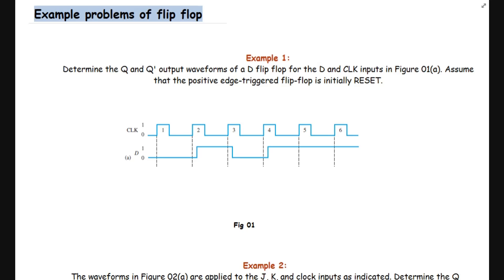Today we are going to solve some example problems of flip-flop. Example 1: Determine the Q and Q' output waveforms of a D flip-flop for the D and clock inputs as shown in Figure 01A. We have the clock signal and D signal given. Assume that the positive edge triggered flip-flop is initially reset. So this flip-flop is triggered with the positive edge.